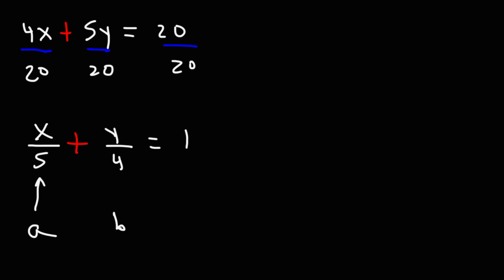Our a value is 5, and our b value is 4. So the x-intercept is going to be whatever this number is. The x-intercept is 5, which means we can write it as an ordered pair as 5, 0. And the y-intercept, that's our b value, that's 4. So we can write the solution as an ordered pair, which is 0, 4. So that's how you can quickly determine the x and y-intercepts using the intercept form of the linear equation.